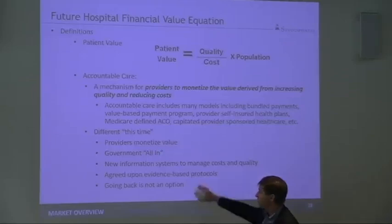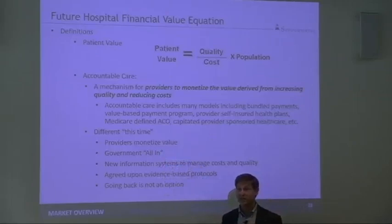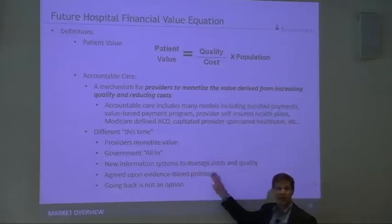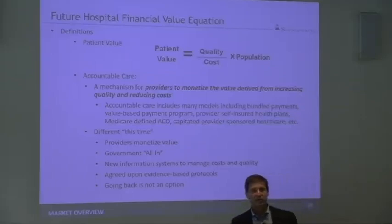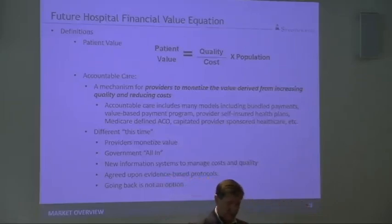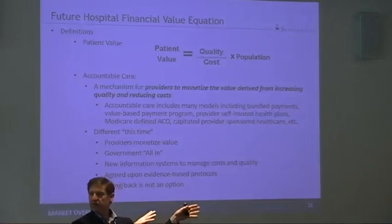The second thing is the government is all in now. Government says we need to change to a new payment system — accountable care methodology in which providers monetize the value of increasing quality, reducing cost. New information systems to manage quality and cost. Back when I was involved in the IPA, we used to look at claims data to drive improvement in our physician practices. We had to wait 90 days for Blue Cross to run it.